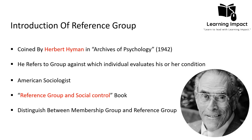Individuals use the reference group to evaluate their condition, conduct in society, and their own capabilities, tending to become like members of that group. For example, sociology students who want to become professors may treat a group of sociology professors as their reference group — even university professors or professors on social media — as they aspire to be like them.